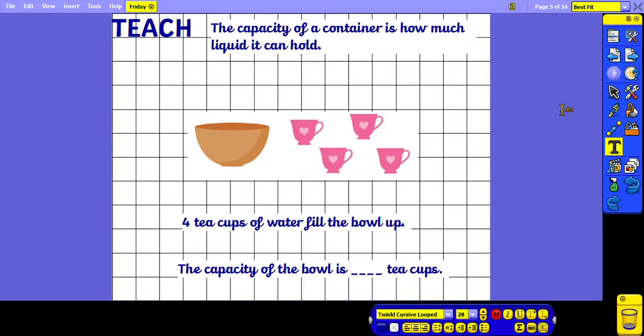So here we've been told that four teacups of water filled the bowl up. So our units of measurement are the teacups, and the container we are filling up is the bowl. Because it takes four teacups of water to fill the bowl up, we know that the capacity, so the amount of water that the bowl holds, is four teacups.